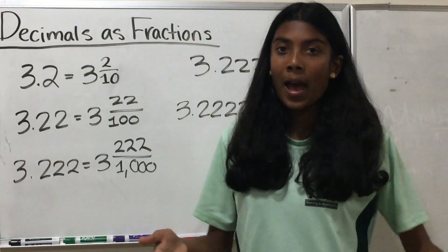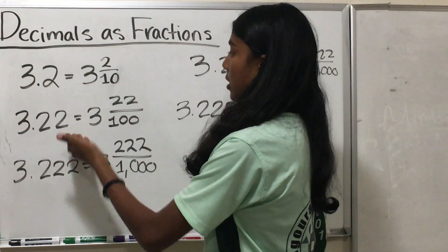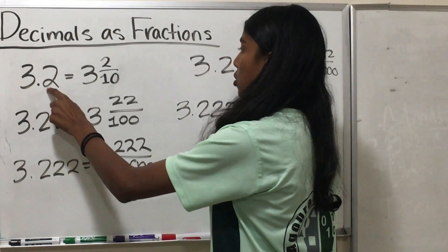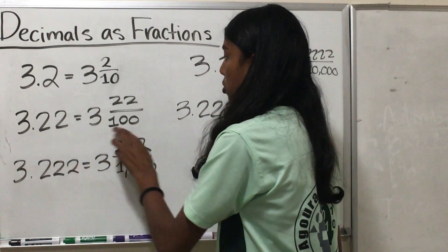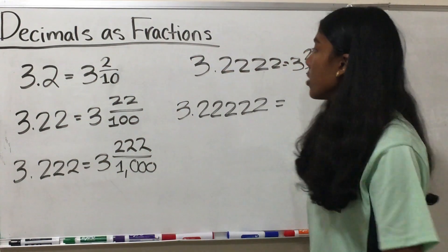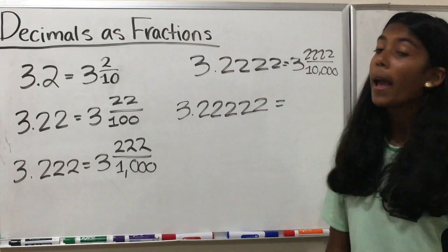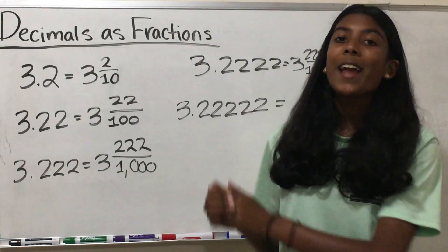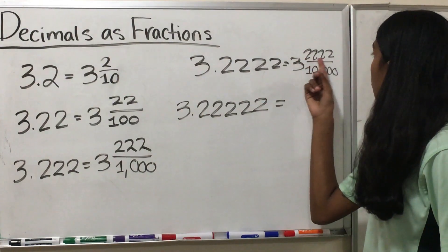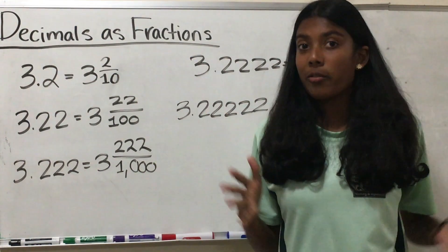Now you might notice a pattern. The number of digits after the decimal point tells us how many zeros we have in the denominator. We have 1 digit after the decimal, we have 1 zero. We have 2 twos, we have 2 zeros. We have 3 twos, we have 3 zeros. So for 3.2222, we're going to have 4 zeros because there are 4 digits after the decimal, giving us 3 and 2222 over 10000.